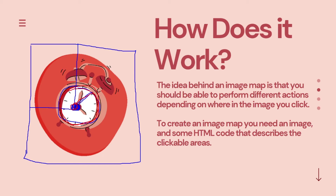Let's take another example — a rectangle shape. I need to specify coordinates: one coordinate for one corner and a second coordinate for the opposite corner. With these two coordinates, I can draw the rectangle. So I need to specify these two pairs of coordinates to define a rectangular clickable area. This is the HTML code we have to write to describe the clickable area.